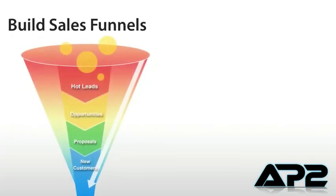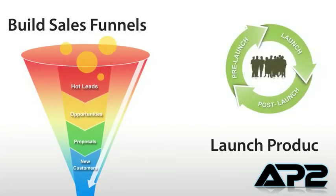Here are those two methods. First of all, building sales funnels and/or launching products. For the past six months, we've personally used Authority Pro to easily sell over a million dollars worth of digital products and software.